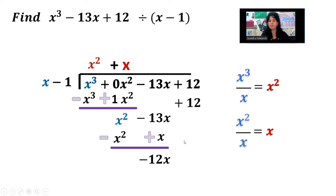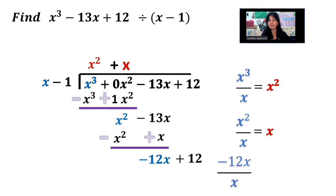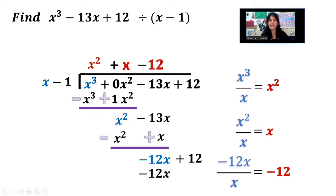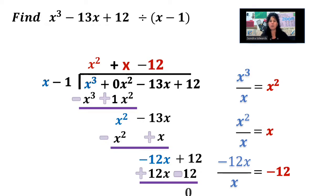Bring down the 12, and we're ready to start again. To decide what goes up here, we take what's in front over what's in front. So negative 12x over x is negative 12. That goes right there. Then multiply negative 12 times each of the terms on the side: negative 12 times x is negative 12x, negative 12 times negative 1 is plus 12. Draw our line and subtract, running that negative all the way through — that negative becomes plus, and that plus becomes minus.